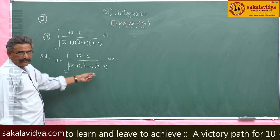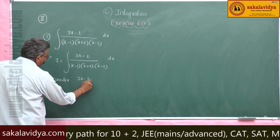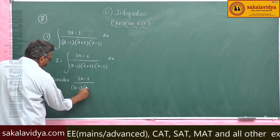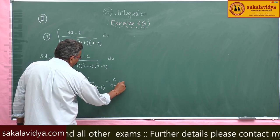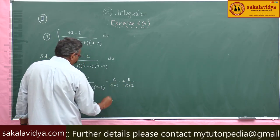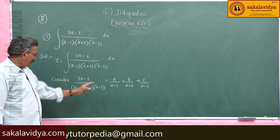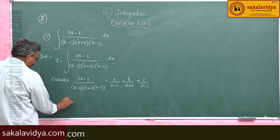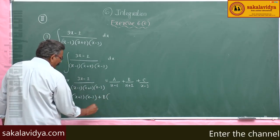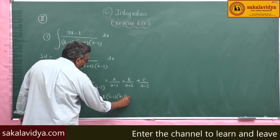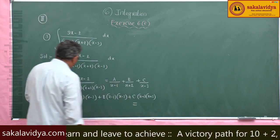Now we have to find the partial fractions of this function. Consider (3x minus 2) over (x minus 1)(x plus 2)(x minus 3) equals A over (x minus 1) plus B over (x plus 2) plus C over (x minus 3). Multiplying both sides by (x minus 1)(x plus 2)(x minus 3), we get A(x+2)(x-3) plus B(x-1)(x-3) plus C(x-1)(x+2) equals 3x minus 2.